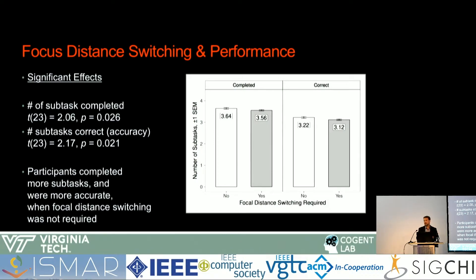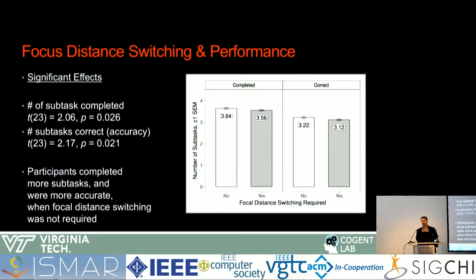Now moving to focal distance switching results. Here we're manipulating all the different distances shown earlier. When we look at task performance — number of subtasks completed and accuracy — we have main effects. Not surprisingly, when forced to distance switch, you complete fewer subtasks and do them more poorly. Although this had been shown in other domains, we were able to quantify it in the AR and MR domain. When we asked why there were more errors — what about the experimental setup, stimulus, or hardware caused this — we looked at where errors occurred.